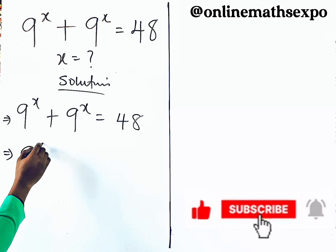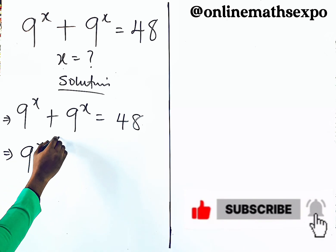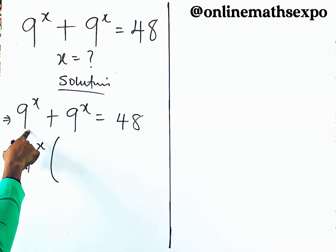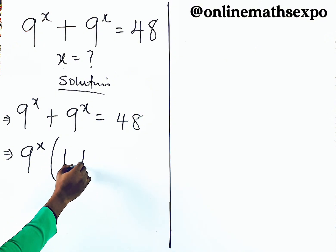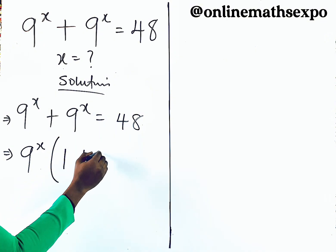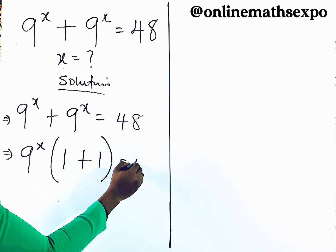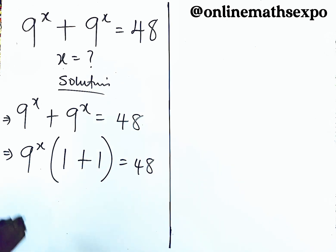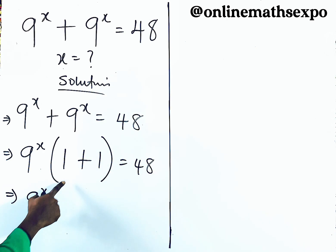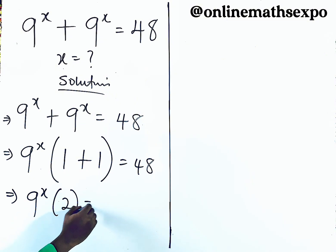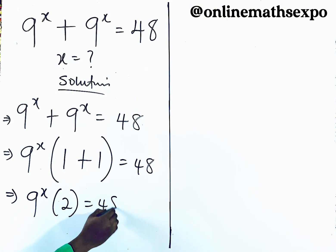So we have 9 to the power of x, open a bracket, divide this by itself to get 1, plus divide this by itself to get 1, and that is equal to 48. Now 1 plus 1 gives you 2, so we have 9 to the power of x times 2 is equal to 48.